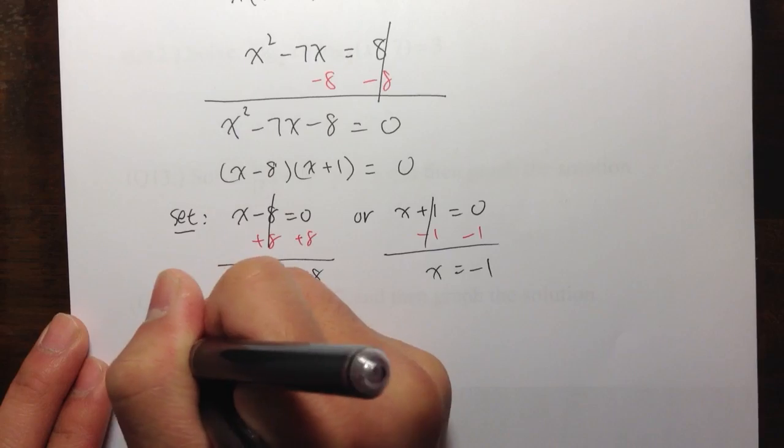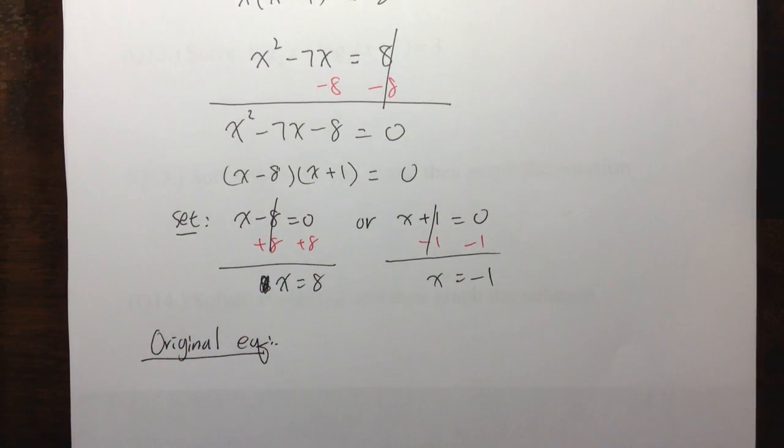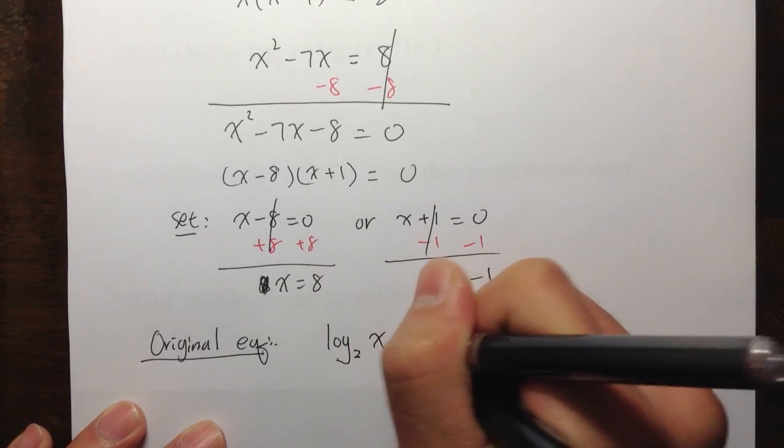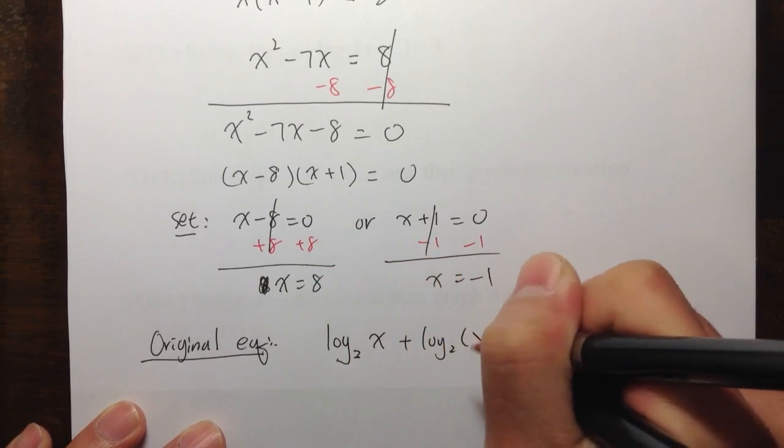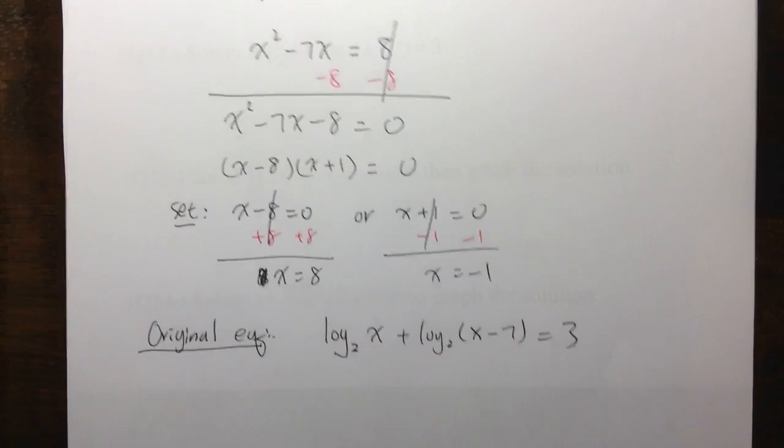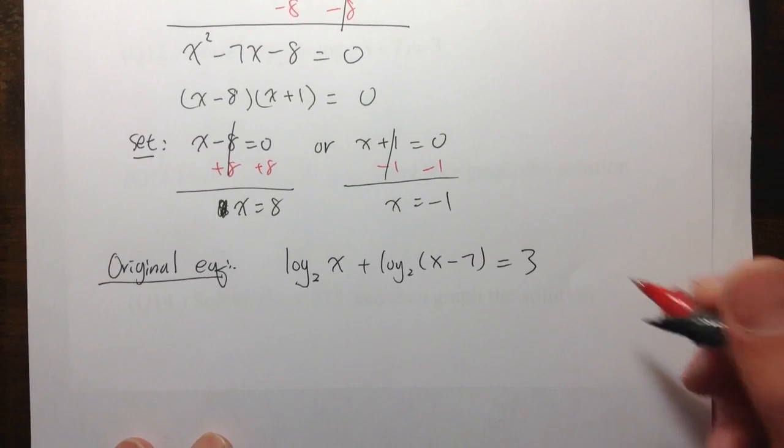So, let's look at the original equation. Always go back to the original equation. I have log base 2 of X plus log base 2 of X minus 7. That's equal to 3. So, what we need to be careful is, and maybe let me put down the third note right here.